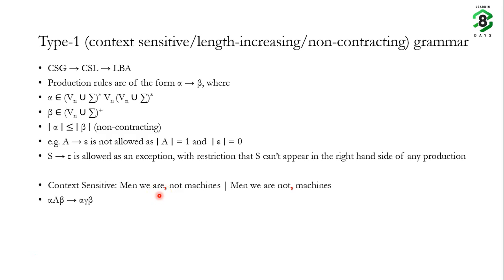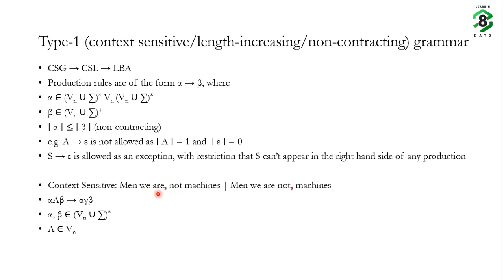In this form, alpha and beta belong to the Kleene closure of (Vn union sigma), A belongs to Vn, and gamma belongs to the positive closure of (Vn union sigma).